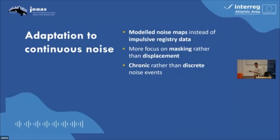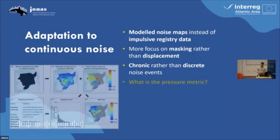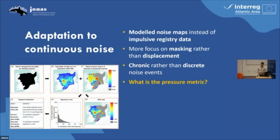So we had that framework for impulsive noise, and we needed to adapt it for continuous. The data sources are different, we're looking more at masking than displacement, and it's chronic rather than discrete. So there are quite some differences — the main challenges being: what is the pressure metric?